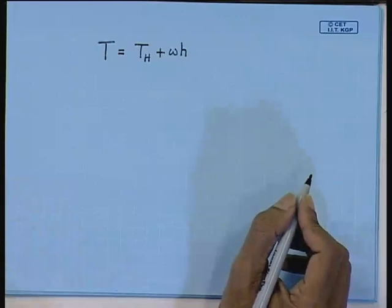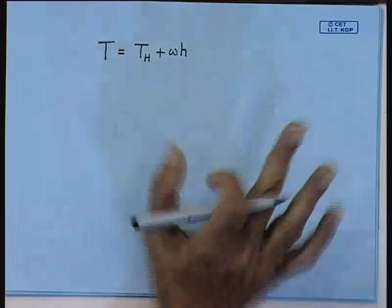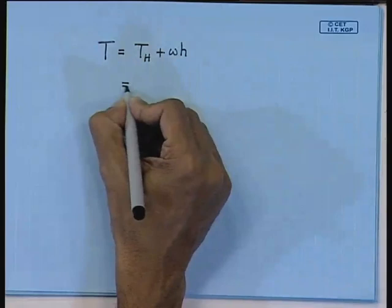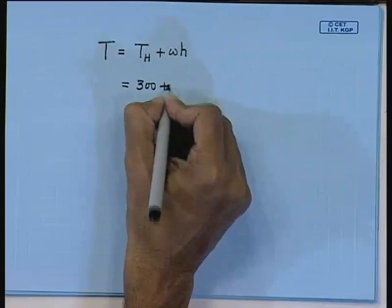This is straightforward. T_H is already given, coming as 300. Now W — how much it is given? This is 1000. So, this is 1000 and the seabed is 200 meters.